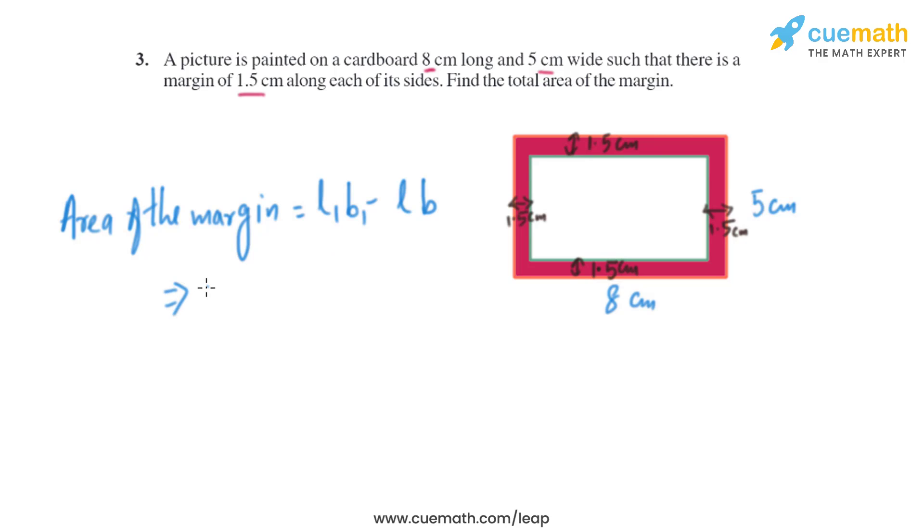We know the dimension of the bigger rectangle - that is 8 and 5. Let's find the dimension of the smaller rectangle. So the length of the smaller rectangle will be 8 minus 1.5 minus 1.5, so basically we are subtracting 3 from 8, so it is basically 5 centimeter.